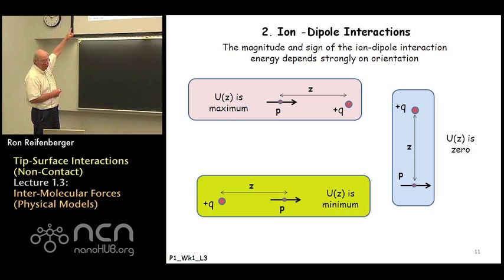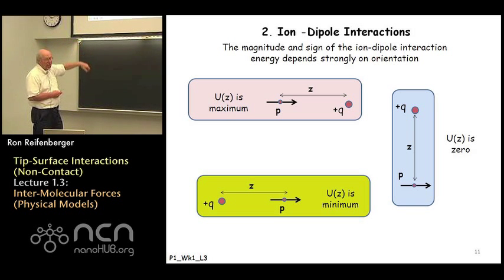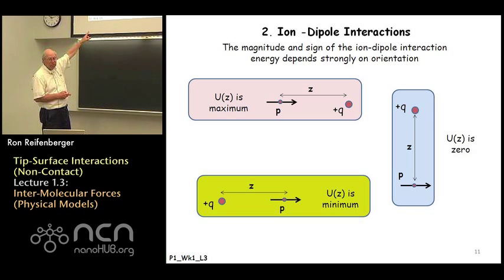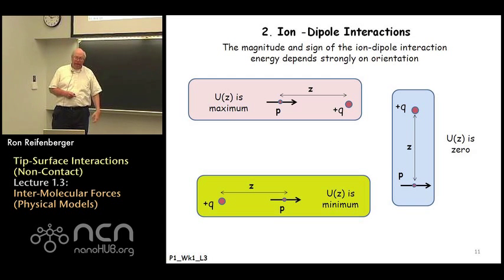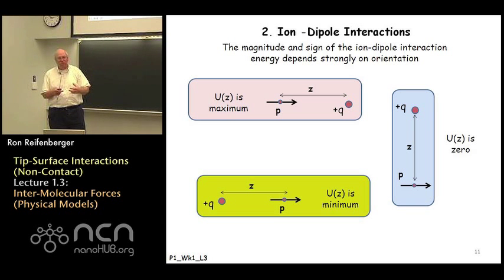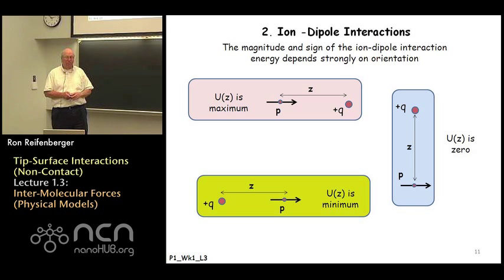Conversely, if you take the ion and move it to the left side of the dipole while maintaining the same position of the dipole moment, what you'll find is that the interaction potential energy is a minimum. That's simply because now the positive ion plus q is interacting more strongly with the negative end of the molecule — it produces a minimum of potential energy. The third case is the situation in which the positive ion q is located directly above the dipole moment p. In this situation, the interaction potential energy — if you calculate it — is precisely zero. So how the ion is oriented with respect to the molecule determines the sign of the potential energy.